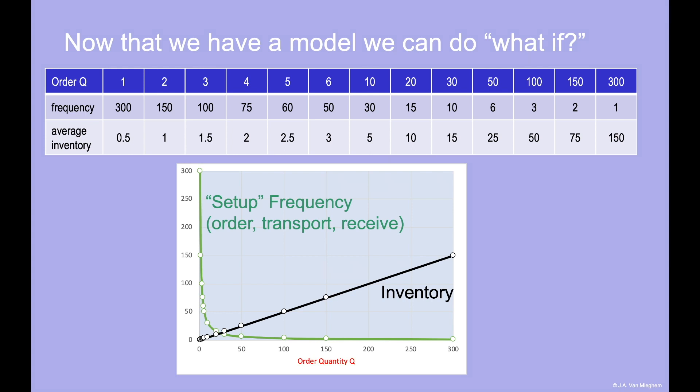By changing the order quantity Q, we see two conflicted forces at play. A high batch size requires a lower frequency. That reduces your cost of placing an order, transporting it, and receiving it. But it also costs more inventory. The EOQ solution finds the economically optimal trade-off.